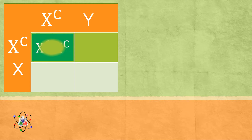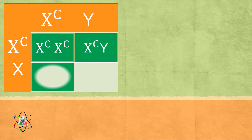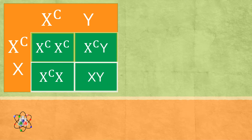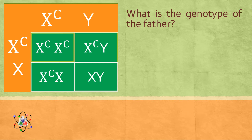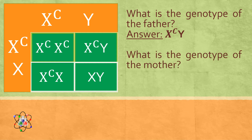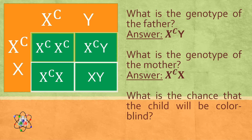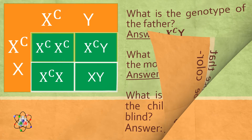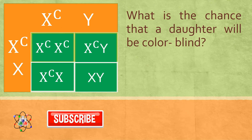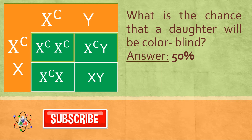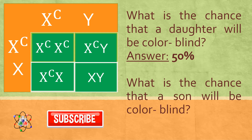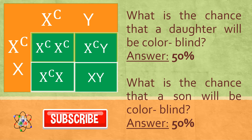By multiplying the alleles, we will have XCXC, XCY, XCX, and XY. There is a 50% chance that the child will be colorblind. The chance that a daughter will be colorblind is 50%. The chance that a son will be colorblind is also 50%.